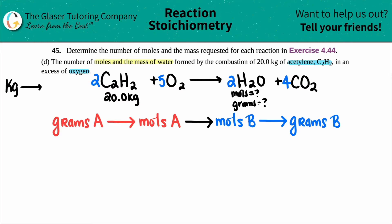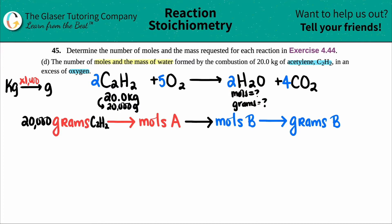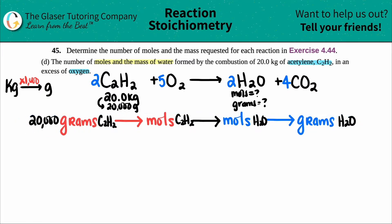The first thing is to convert kilograms to grams. Kilograms to grams: multiply by 1000, or move the decimal three spots to the right. So 20.0 kilograms = 20,000 grams. That's the number we'll use: 20,000 grams of C₂H₂. From there we go to moles of C₂H₂, then moles of water, then grams of water.